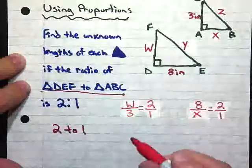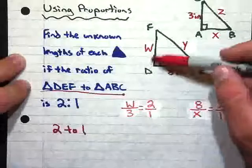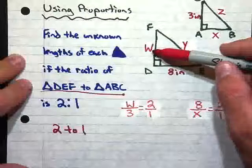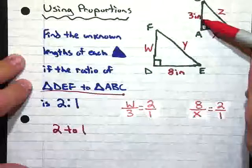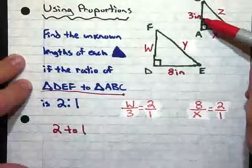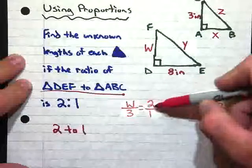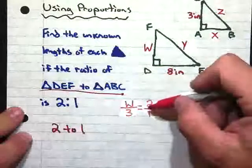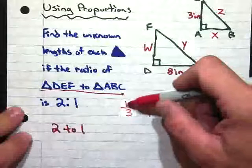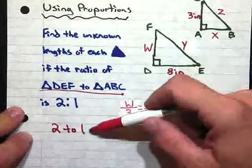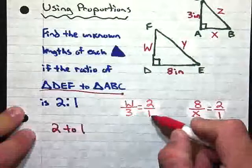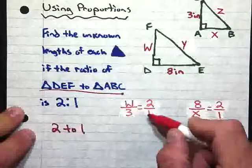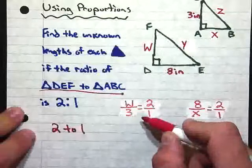So when we try to use a proportion here, you can see that if we try to find the length of DF, which we know as W units, we would place W over its corresponding part on the smaller triangle, which is 3 inches. So we would have W over 3 equals 2 over 1, which is our ratio. And the reason that we did that is because this 2 goes with triangle DEF, and we have the length of DEF on top here. So those 2 go together. 1 corresponds with triangle ABC. So there's our 1, and we have the length of the small triangle ABC down below. So you can see that the corresponding denominators and corresponding numerators line up as well.